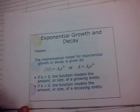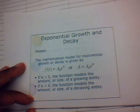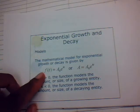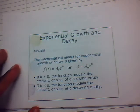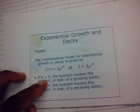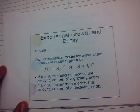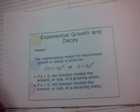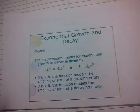We'll first talk about exponential growth and decay. The mathematical model looks like this: f(x) is equal to a sub 0 times E to the k times t, or we can say a is equal to a sub 0 times E to the kt. If k is a positive number greater than 0, that means the function models the amount or size of a growing entity. If k is less than 0, then the function models the amount or size of a decaying entity — meaning the size of that particle or population is decreasing.